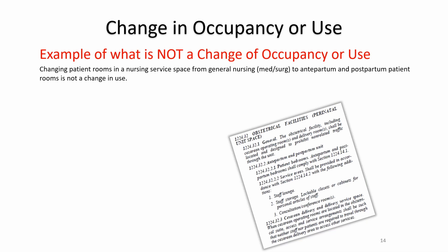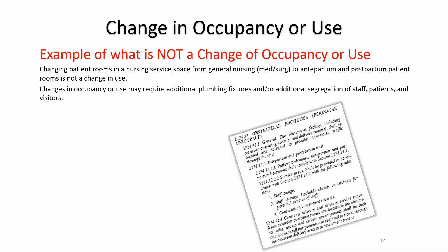An example of what is NOT a change of occupancy: changing patient rooms in a nursing service space from general nursing to antepartum or postpartum patient rooms is not a change in use. In layman's terms, it was used as a patient bedroom for nursing purposes and it still is — just a different variety. What you're changing there is the function, not the occupancy or use. Changes in occupancy or use may require additional plumbing fixtures and additional segregated staff, patient, and visitor toilet rooms.